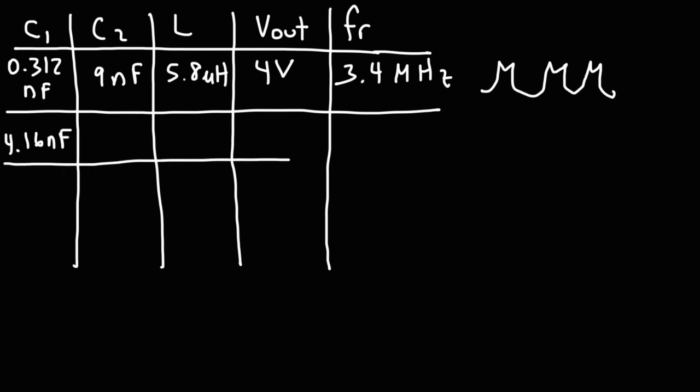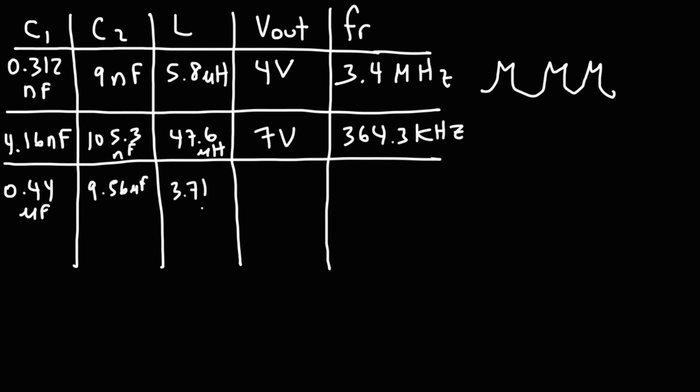At the values that I gave you before, where C1 was 4.16 nanofarads, and C2 105.3 nanofarads, L being 47.6 microhenries, with an output voltage of approximately 7, the measured frequency was 364.3 kilohertz. I've also tried these values, 0.44 microfarads, 9.56 for C2. That was a 10 microfarad electrolytic capacitor, but it was measured at 9.56 microfarads. And L was set to 3.71 millihenries. The output voltage for this was also about 4 volts, but the measured frequency was 4.77 kilohertz. The last two trials produced a relatively smooth sine wave at the output, which was good.